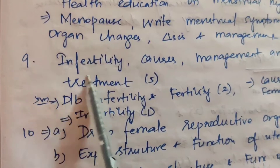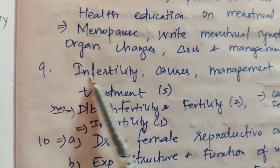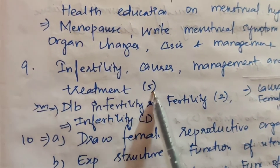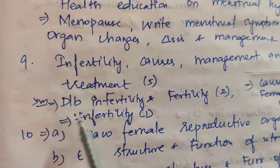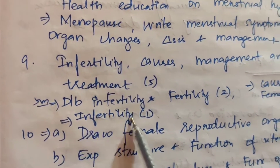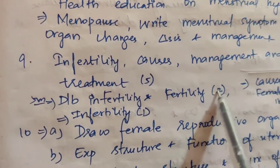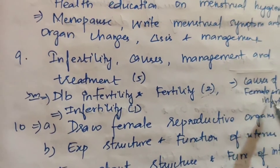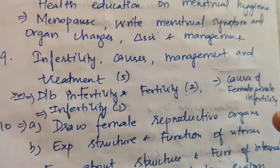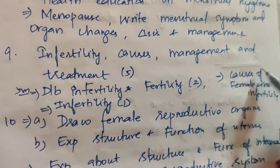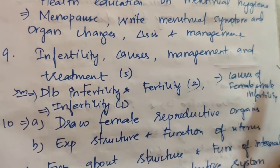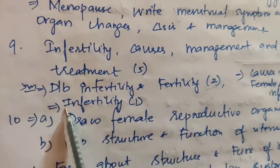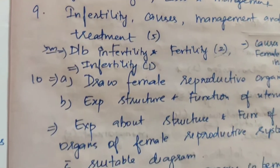Ninth one: infertility — define infertility, causes, management and treatment — five times. In 5 marks: differentiate between infertility and fertility — two times. Causes of female and male infertility, causes of male infertility.